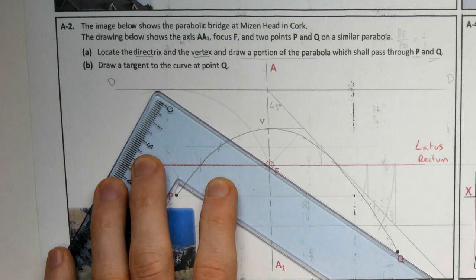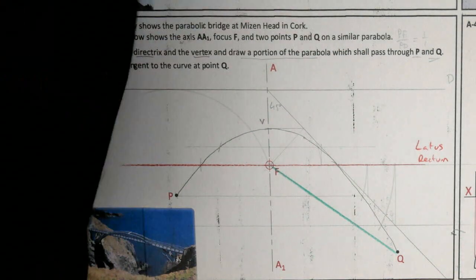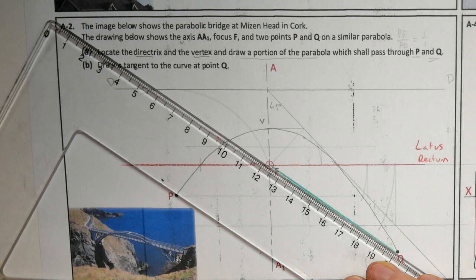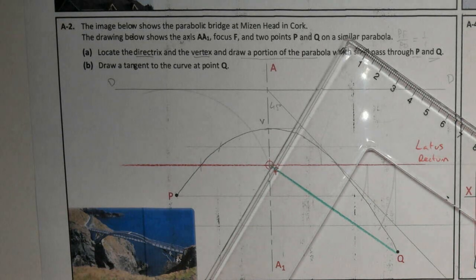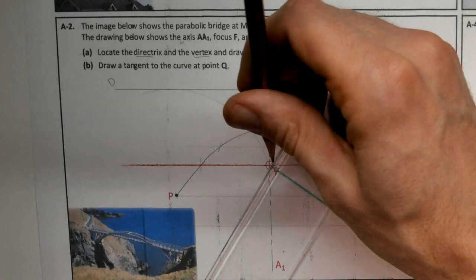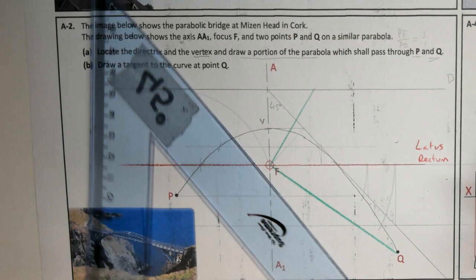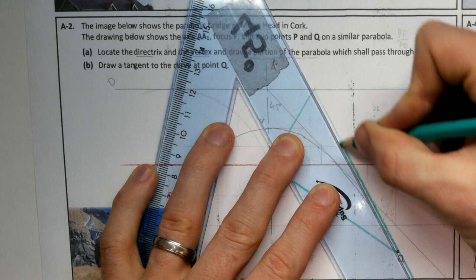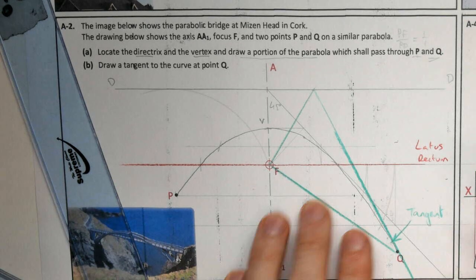I'm going to go at 90 degrees to that line until I hit the directrix. 90 degrees to QF until I hit the directrix. I'm going to join that back to Q. So that there is a tangent at point Q.